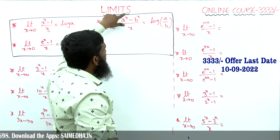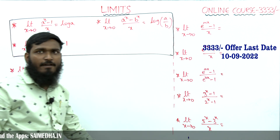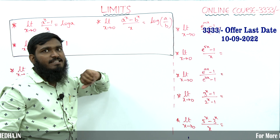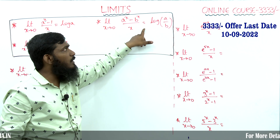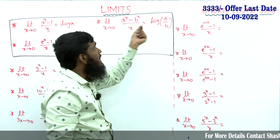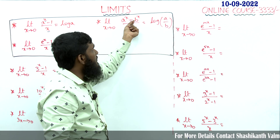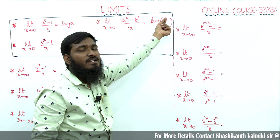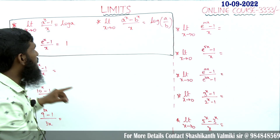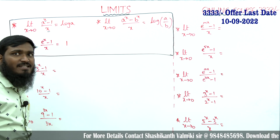One more shortcut: limit x tends to 0, a^x minus b^x divided by x equals log(a/b). We directly write log of a over b — whatever the a value goes in the numerator and the b value goes in the denominator. Now with the help of these shortcuts, let us solve questions and write direct answers in a single step.